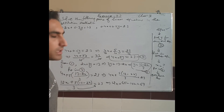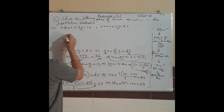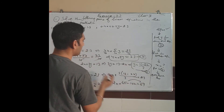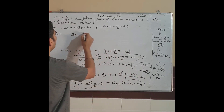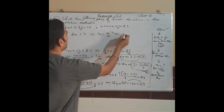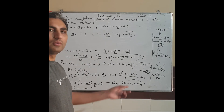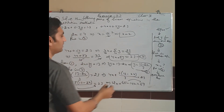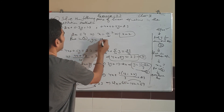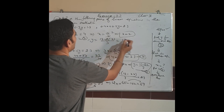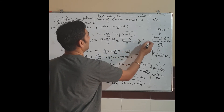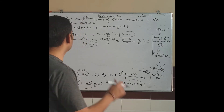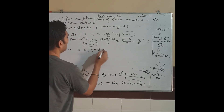Now put x = 2 into equation 3: y = (13 − 2·2)/3 = (13 − 4)/3 = 9/3 = 3. So y = 3. Therefore x = 2, y = 3 is the required solution.